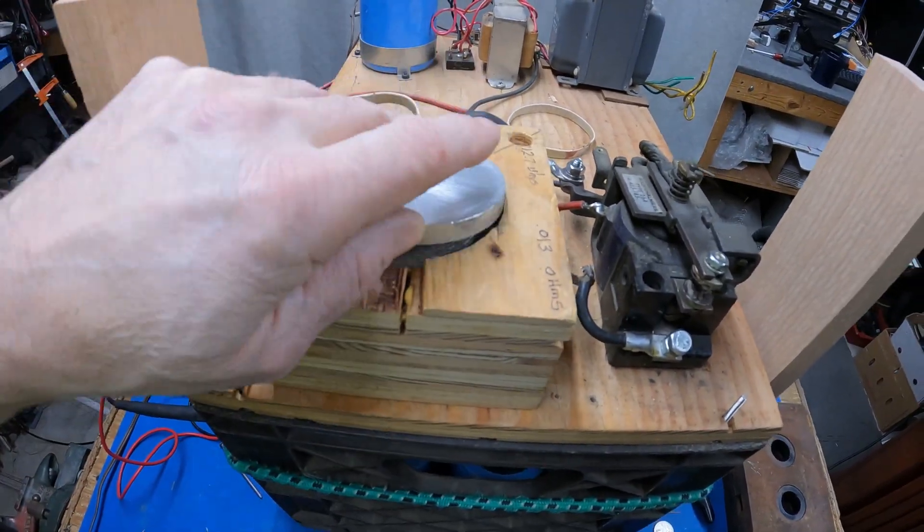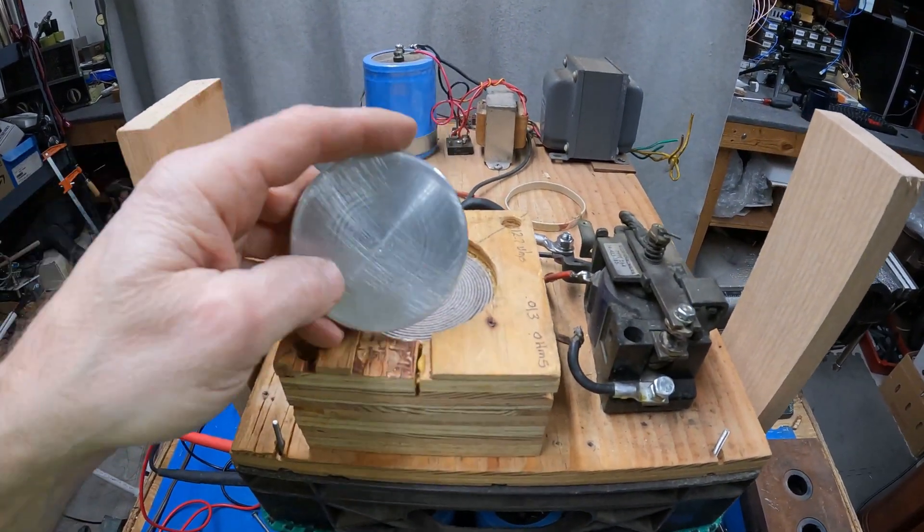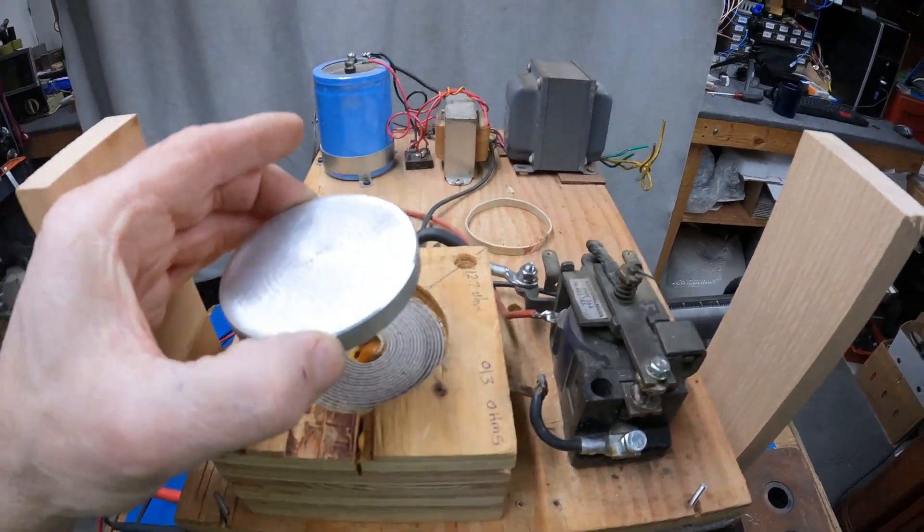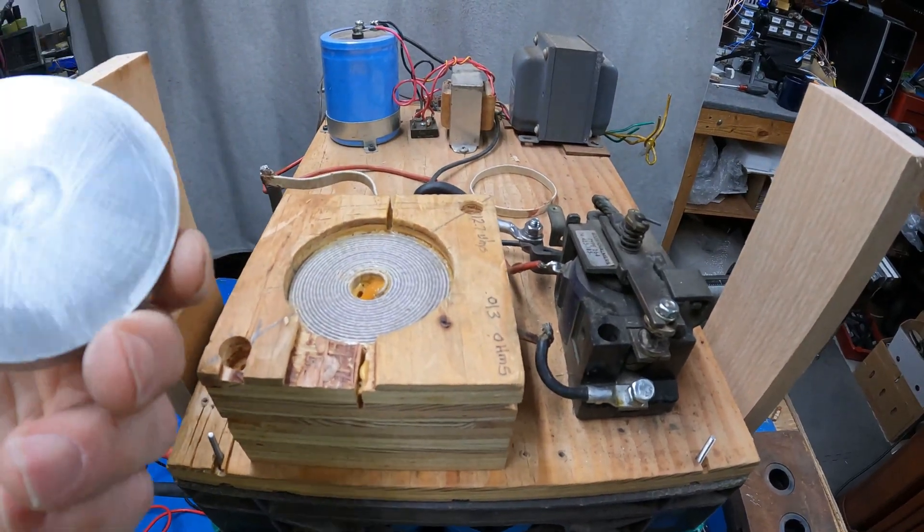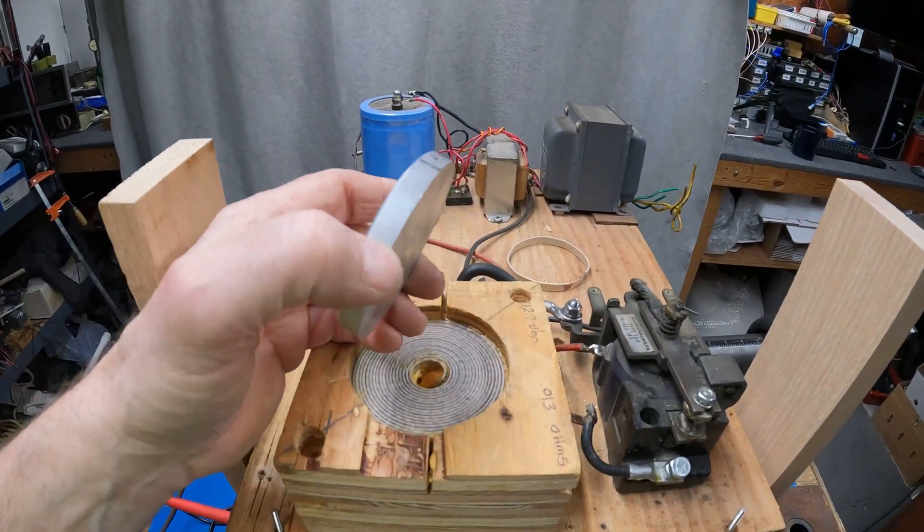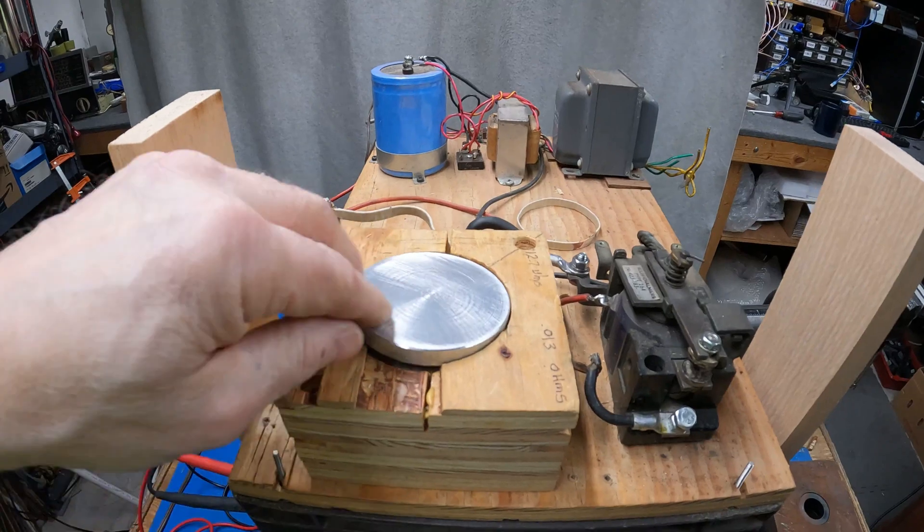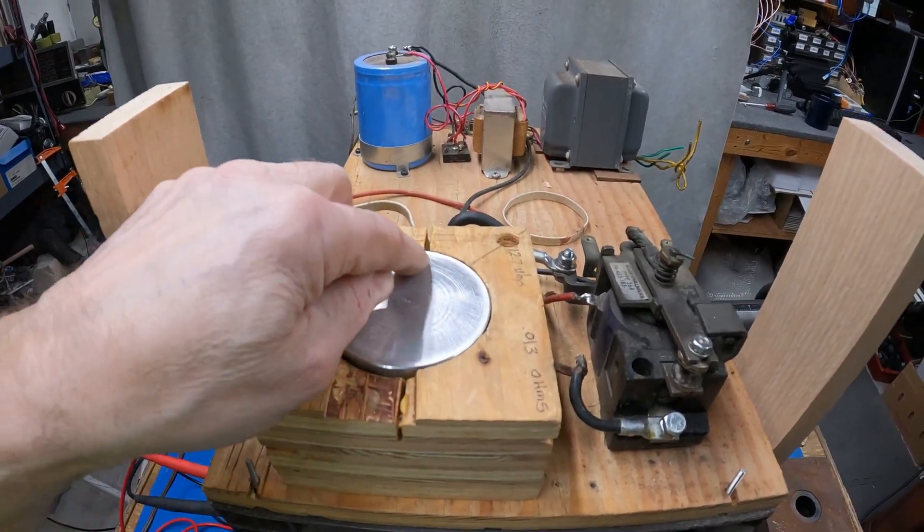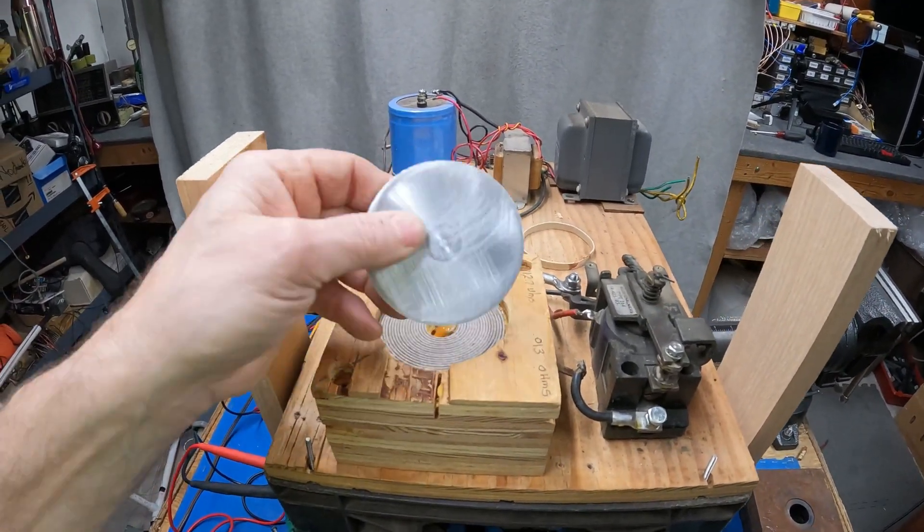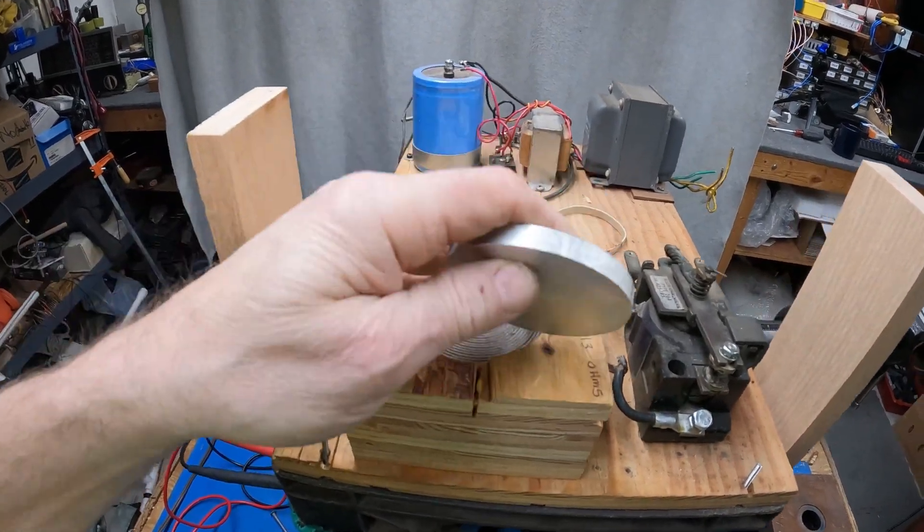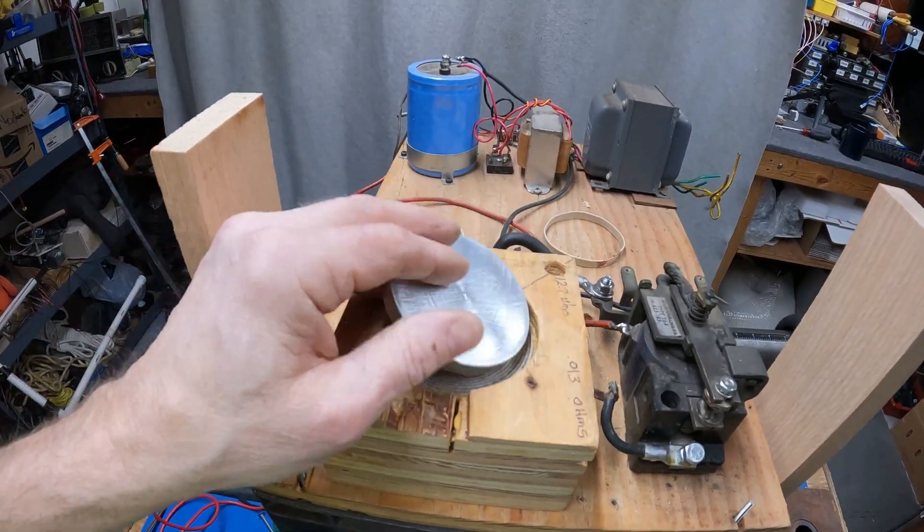This puck, when you dump all the current into the coil, you end up with a magnetic field that induces a huge magnetic field into this puck in the same polarity, like poles. So if the top of that coil is north, then the bottom of this disc would be north as well. Because there's a huge magnetic field here and it's essentially a short circuit, this disc will end up with a huge magnetic field in the same polarity, and so it'll push out quite violently.